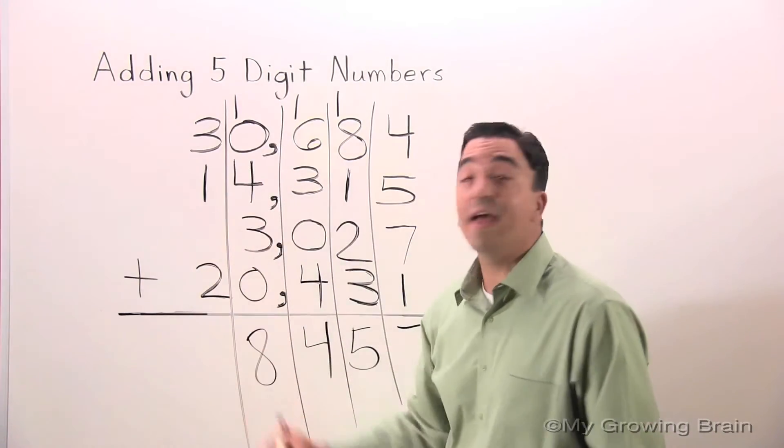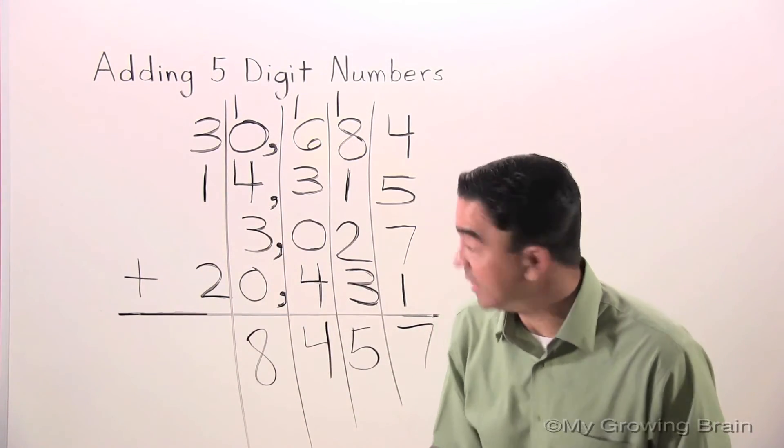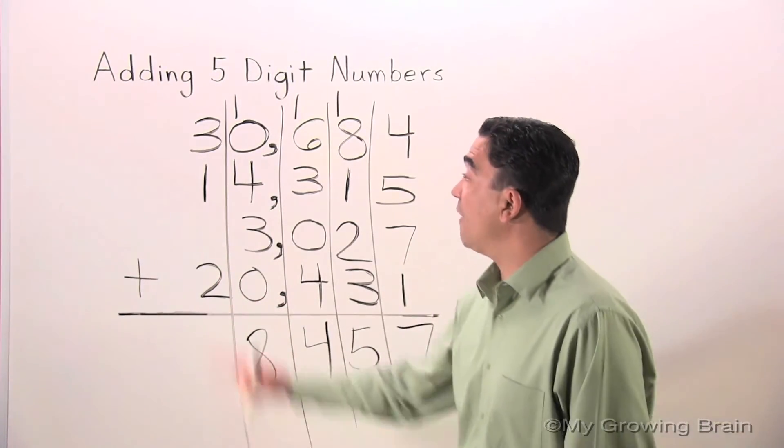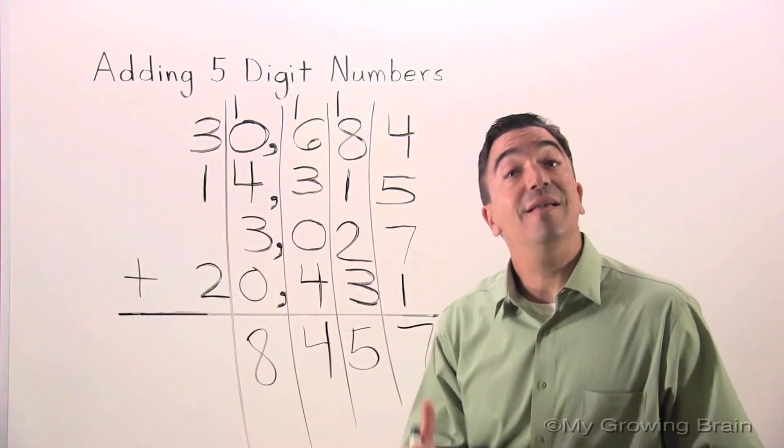Now, we're going to go to the ten thousands place. Three plus two is five. Five plus one is six.